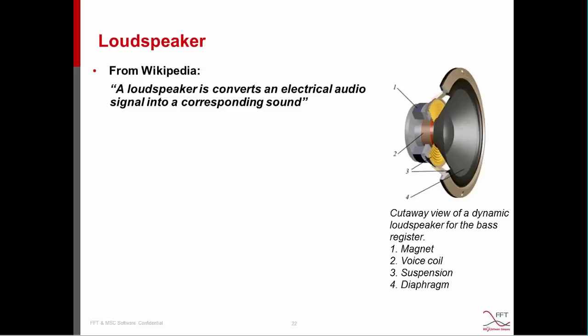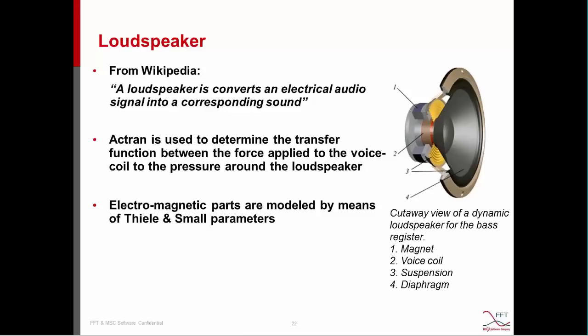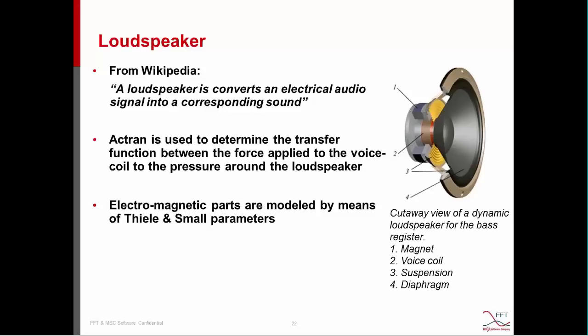Now we can go on with the demo case — the sensitivity analysis of the loudspeaker. Let me first introduce the loudspeaker briefly. A loudspeaker is a device that converts an electrical audio signal into a corresponding sound. Actran is used to determine the transfer function between the force applied to the voice coil and the pressure around the loudspeaker. We are missing the electromagnetic part, so we will use the Thiele-Small (TLS) model parameters to model the electrical part and the coupling with the magnet. Afterwards, we post-process all results to get the voltage-to-acoustic transfer function, which is what we want for the sensitivity analysis.